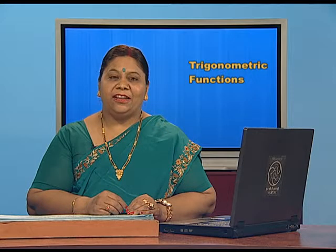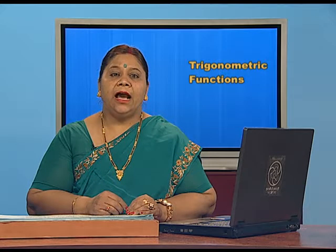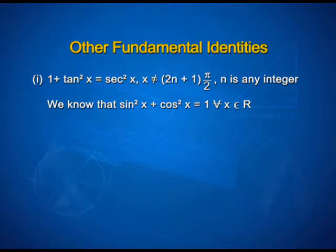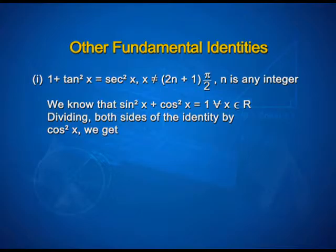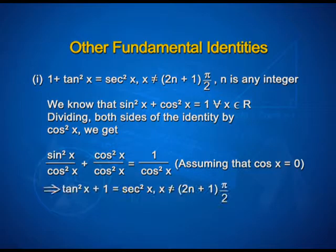Now let us discuss some other fundamental identities. 1 + tan²x = sec²x, when x ≠ (2n+1)π/2, where n is any integer. We derive this from the identity sin²x + cos²x = 1 for every x belonging to R, by dividing both sides by cos²x. We get sin²x/cos²x + cos²x/cos²x = 1/cos²x, assuming cos x ≠ 0. So, tan²x + 1 = sec²x.